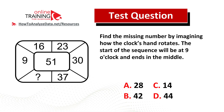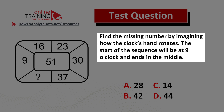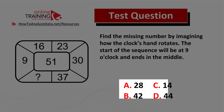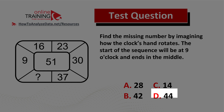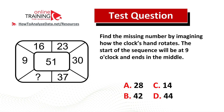Here's a question for you to try. Please post your answer in the comment section and I'll give you my feedback. Find the missing number by imagining how the clock hand rotates. The start of the sequence will be at 9 o'clock and it ends in the middle. You have four choices: choice A 28, choice B 42, choice C 14, and choice D 44. Feel free to pause this video, try to solve it, post your answer in the comments, and I'll give you my feedback. Thanks for participating.